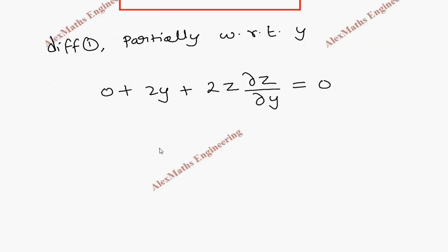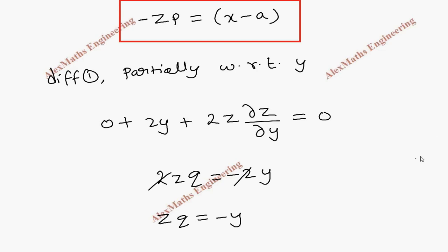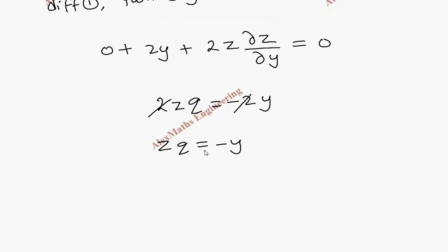Now we can rearrange: 2z·q = -2y. We can cancel the 2s, so zq = -y. And we notice there is no constant present here, so this itself is our required answer.